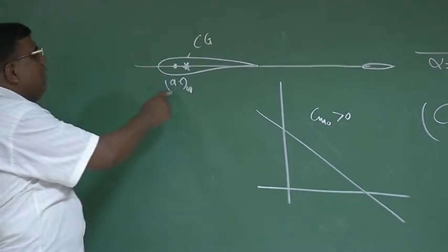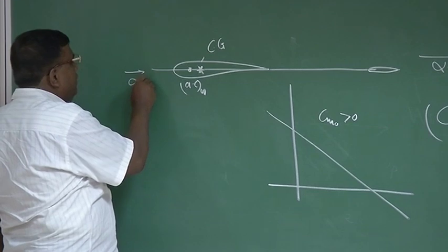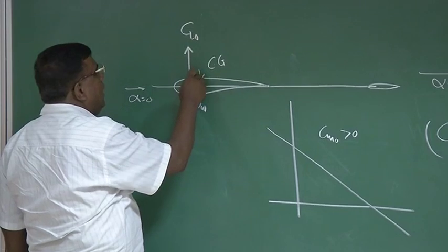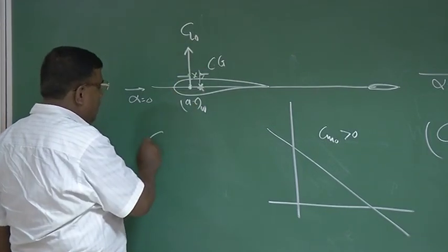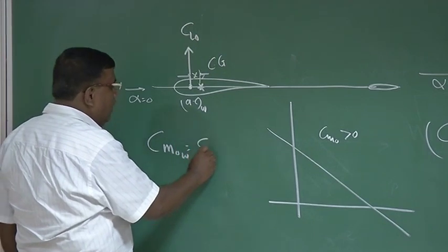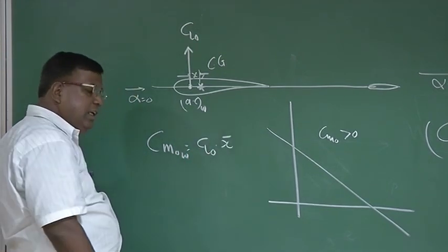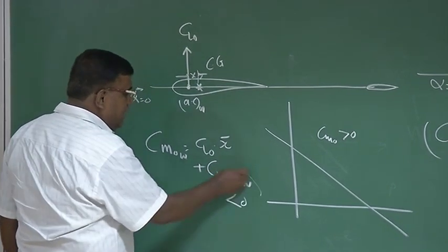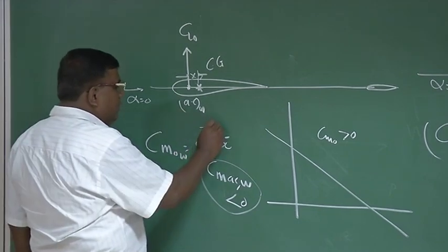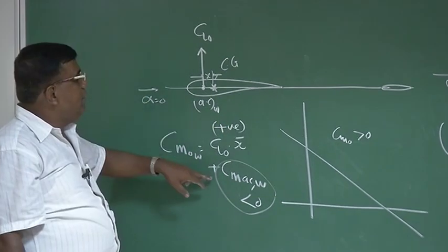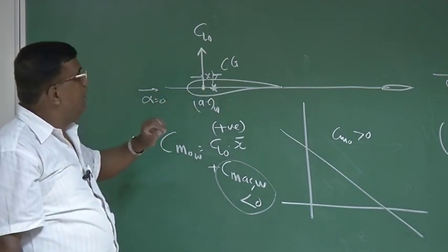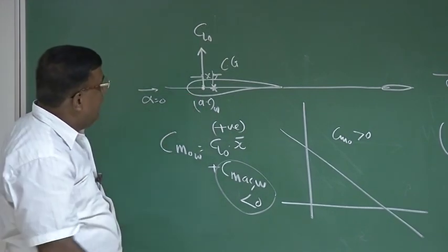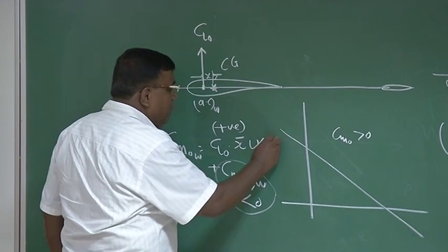The moment I put AC of the wing ahead of CG, check at alpha equal to 0. Here this is CL0, and as before, this is x, the distance. So now CM0 wing will be CL0 into x-bar, which is x divided by C, plus CM AC wing which is less than 0 — negative. This term is negative, but this term is positive.